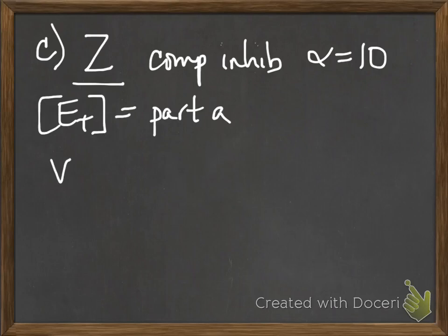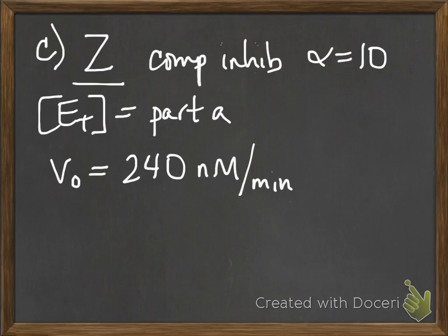The initial velocity is reduced to 240 nanomolar per minute. So the question is, what substrate concentration did you use?